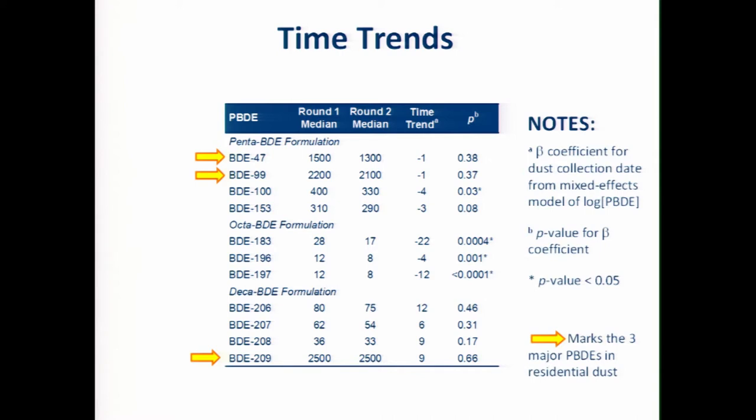This is just a comparison between the first round and the second round. We have the medians shown in the first two columns there, and then there's an estimate of the time trend from a mixed effects model. In this case, the time trend is showing the percent change over the sampling period. You can see essentially that for the PBDEs with the highest concentrations, the major PBDEs, there's not a significant change over time.